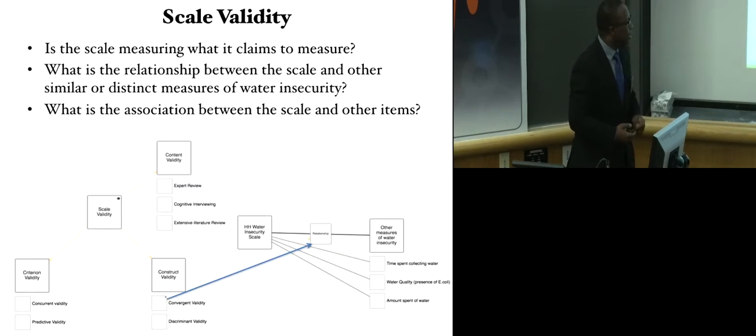And with construct validity, there are also different dimensions to construct validity. One can talk about convergent validity and discriminant validity. With convergent validity, you want to see whether there's a relationship between the items you've been able to build into a scale and another measure of water insecurity. In this case, the amount of money that was spent on water. That is able to tell us that our scale is valid. With our study, we did find it that way.